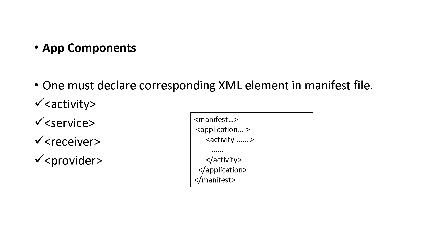Within the manifest, application components are declared. These are the points we discussed before: activity, service, receivers, and content providers. These are the application components of the manifest.xml file.